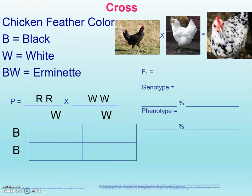Let's work through chicken feather color. With chickens, we might have black feathers — we're going to use a capital B. White feathers, we're going to use a capital W. And our third phenotype is going to be erminette, or some people call this a checkered or speckled chicken. The picture I chose is an American erminette chicken. So we are going to be crossing black — that's big B, big B — cross with white, WW. They're homozygous, they're purebred.